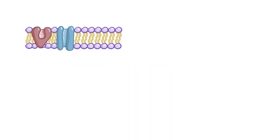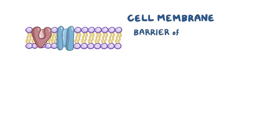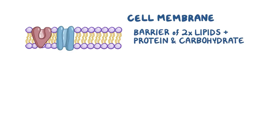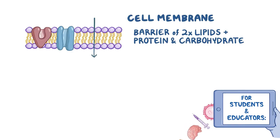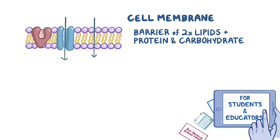Cells transport material in and out across their cell membrane, which is a barrier made up of a double layer of lipids with embedded protein and carbohydrate components. Some molecules can diffuse across the membrane, or be transported across with the help of membrane-bound proteins.